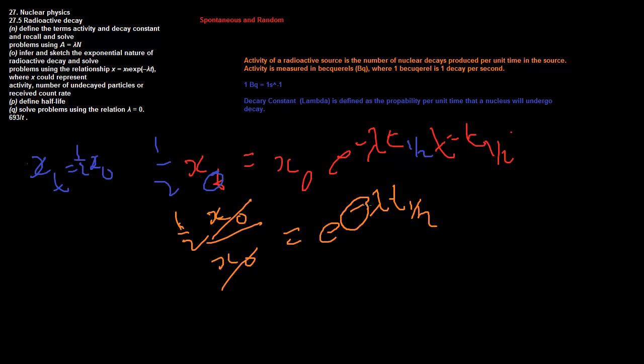And we have e negative lambda t half equal to half. And let's take care of this negative. Remember, negative just means a reciprocal in terms of power. So if we power both sides by negative 1, what do we end up with? Let's put this to the power of negative 1 as well. We end up with this.